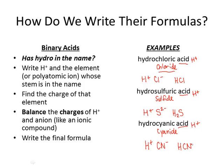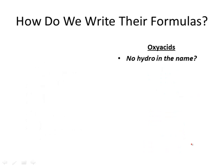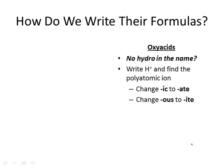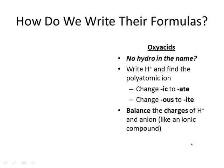Now we're going to move on to oxy acids. Oxy acids do not have 'hydro' in the name — that's how you identify an oxy acid by its name. We write H+ again, and we find the polyatomic ion. For the polyatomic ion, we change -ic in the acid name back to -ate, or change -ous back to -ite, to make sure we're looking at the right anion. Then we balance the charges and write the final formula.